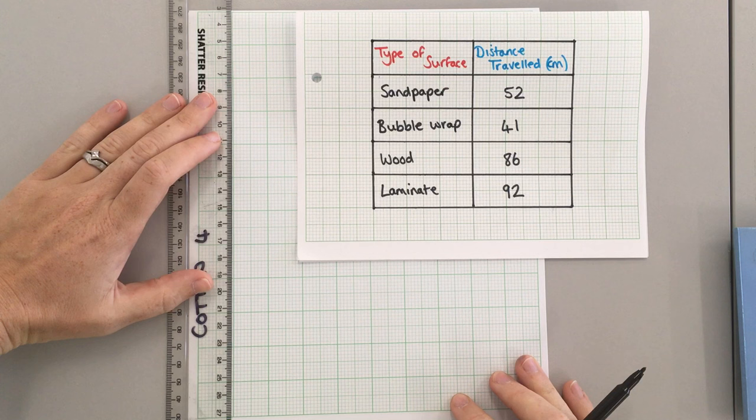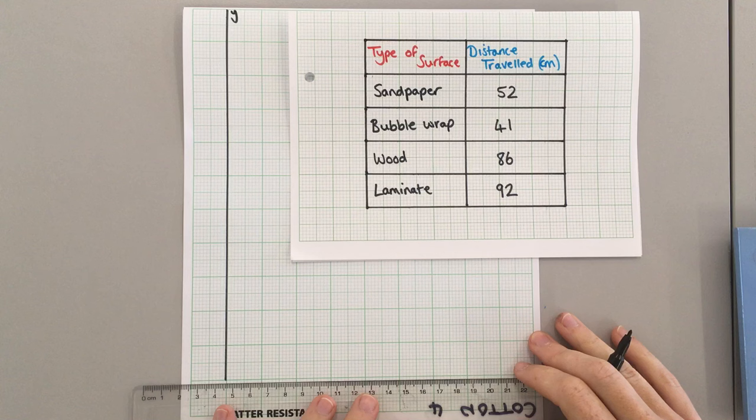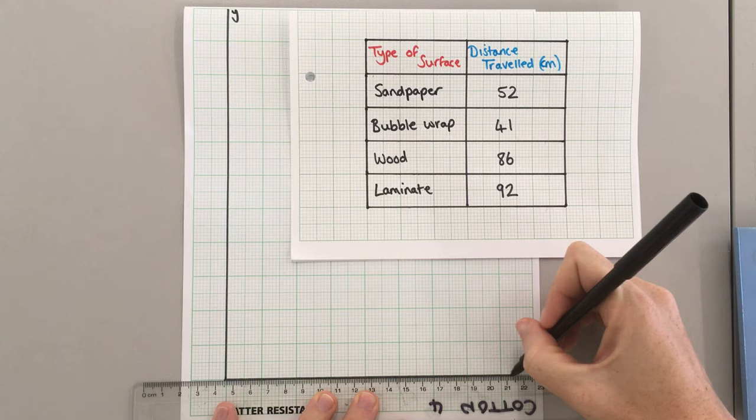Here's the results table that we're going to draw a graph of today. So first of all, I need two axes. I need my y-axis coming down like the y's tail and the x-axis going across the bottom.